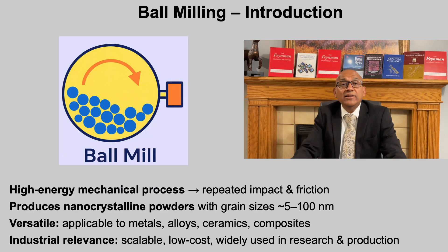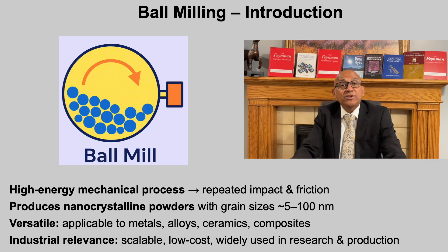One of the earliest and most practical top-down nanofabrication methods is high-energy ball milling. The principle is straightforward: powders and hardened balls are sealed into a rotating drum. As the drum turns, collisions between balls and powder particles generate intense impact and friction. These repeated collisions cause severe plastic deformation, progressively refining grain size into the nanometer range, typically 5 to 100 nanometers.